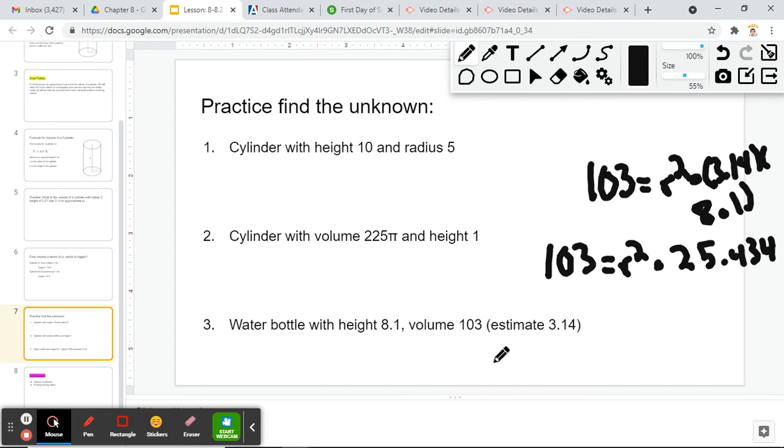So we're going to do 103 divided by 25.434, which equals 4.0496, which equals r².